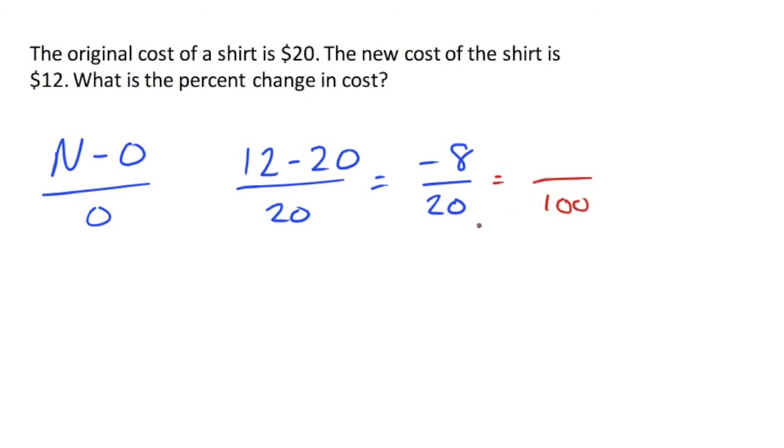So we need to change that into a percentage. The easiest way is to make it out of 100. Again, we're going to multiply by 5. So we end up with negative 40 over 100. So this is going to be negative 40% or you could say a 40% decrease. You see that the only difference between an increase and a decrease is the sign of your percentage.